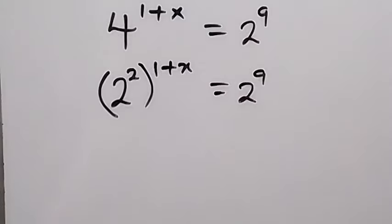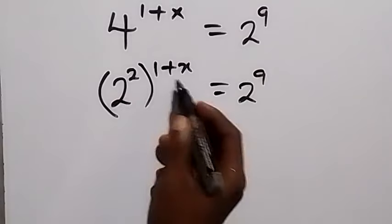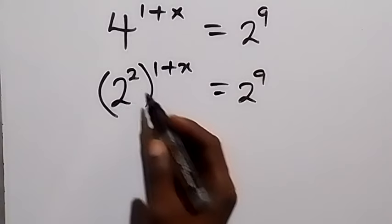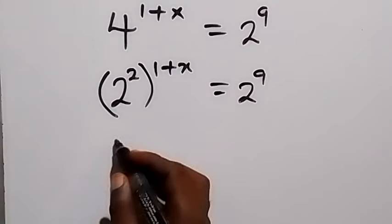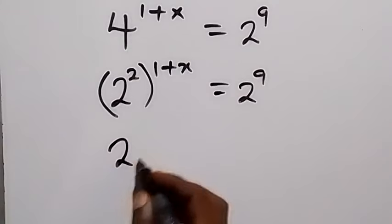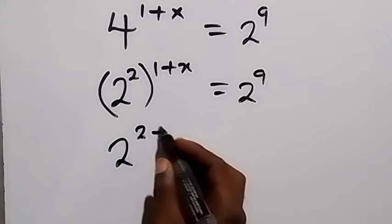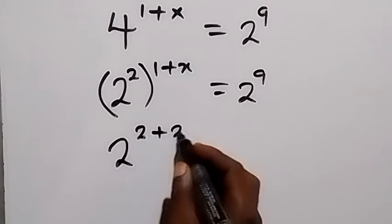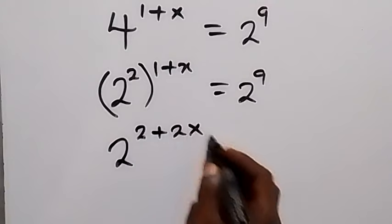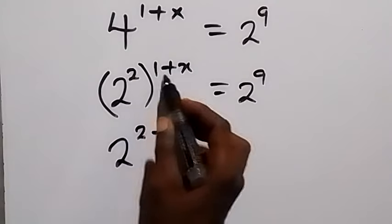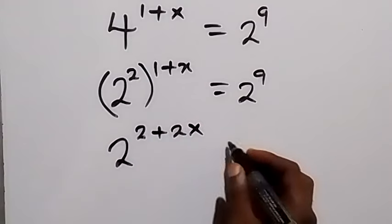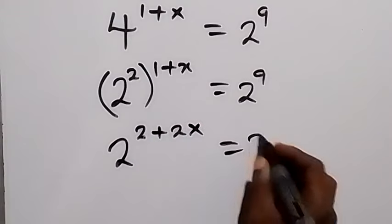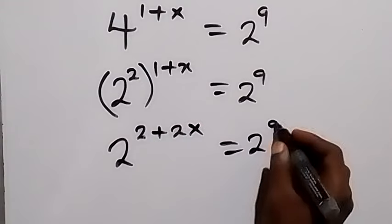From here, this power multiplies. When this power multiplies, it becomes 2 raised to the power 2 plus 2x — because 2 times 1 gives 2, and 2 times x gives 2x — equals 2 raised to the power 9.